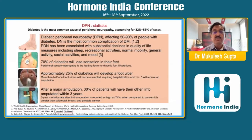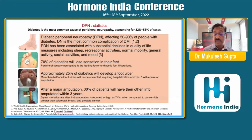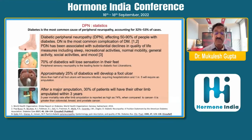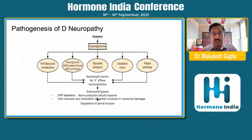We know that diabetes is the most common cause of peripheral neuropathy, which accounts for nearly 32 to 53 percent of cases. Diabetic Peripheral Neuropathy affects nearly 50 to 90 percent of our diabetic population and is one of the most common complications in diabetes, ultimately contributing to the development of Diabetic Foot, which leads to amputation and, once amputation occurs, there is a very high mortality in the future.